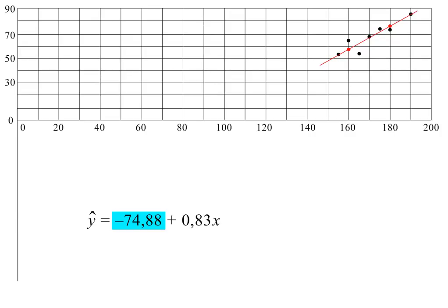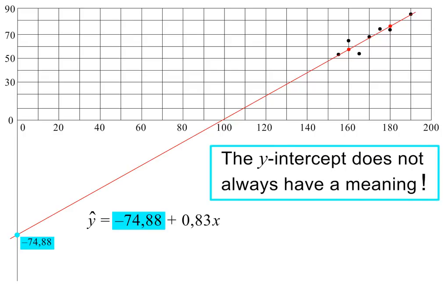If we draw the scatter plot 100% to scale, with both axes starting at 0, the y-intercept will then be at minus 74.88. So be careful when working with scatter plots. The y-intercept given by the equation of the regression line will not always make sense. After all, no one can have a mass of minus 74.88 kg.